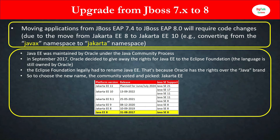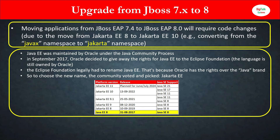Jakarta Enterprise Edition (Jakarta EE) was earlier known as Java EE (Java Enterprise Edition), owned by Oracle through the Java Community Process. In September 2017, Oracle decided to give away the rights for Java EE to the Eclipse Foundation — the Java language itself is still owned by Oracle. The Eclipse Foundation then legally had to rename Java Enterprise Edition because the Java brand is owned by Oracle, and so Java EE was renamed to Jakarta EE.